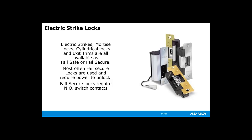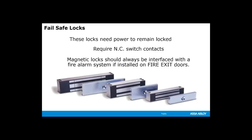Most often, fail-secure locks are used because you need to supply power to unlock them, so they remain locked at all times. Fail-secure locks require a normally open switch. Fail-safe locks, such as mag locks or fail-safe strikes, require power to keep them locked. When power is interrupted to the lock, the door becomes unlocked. Fail-safe locks are most often used in the means of egress, automatically unlocking when the fire alarm is activated, cutting electricity to the mag locks and allowing people to exit the building freely. Fail-safe locks require normally closed switches.